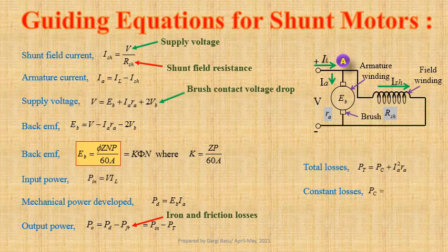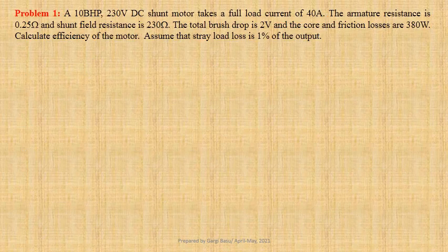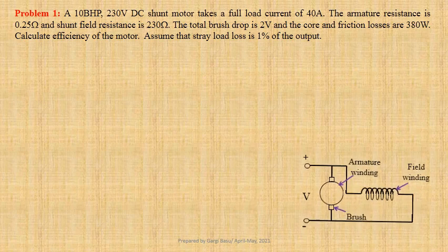Constant losses PC equals PFR plus ISH² times RSH. Efficiency of the motor eta equals PO divided by PIN.